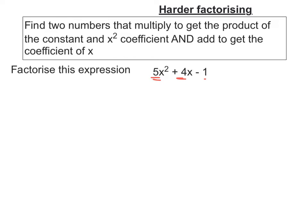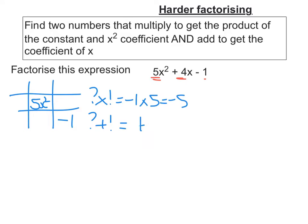Let's have a go at one and see how we get on. So draw out my grid, put in the x squared term in the top left and the constant term bottom right. So I'm looking for two numbers that multiply to get the constant times by the x squared coefficient, so negative 5, but still add to get the coefficient of x, so 4.